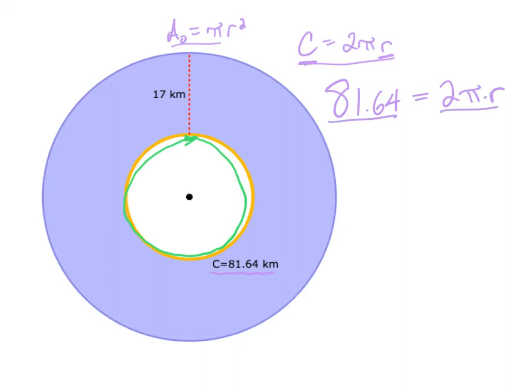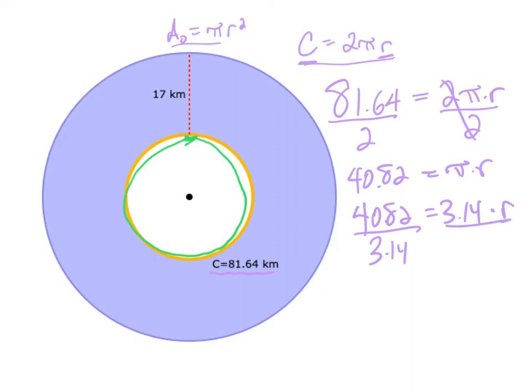First thing I'm going to do is try to get r all by itself. I'm multiplying by 2, so I'm going to divide by 2. These cancel. And 81.64 divided by 2 is 40.82. And that's equal to pi times r. Well, I'm going to substitute in for pi. I'm going to substitute in 3.14. That's what I'm going to use. So 3.14 times r. So I'm solving for r. I'm going to divide by 3.14. Divide by 3.14. Well, this divided gives r is 13 kilometers. That is my radius right here. This is 13 kilometers.